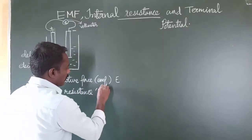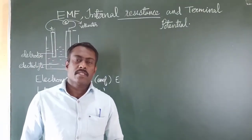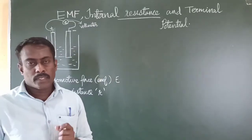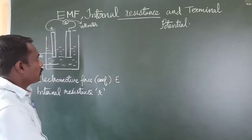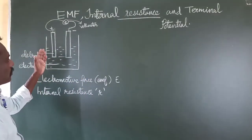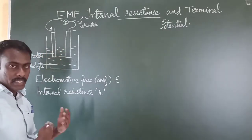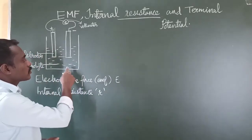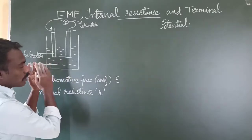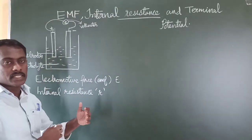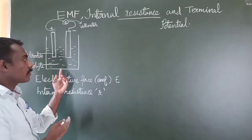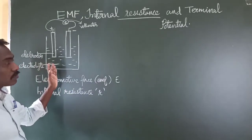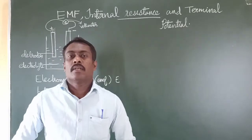The internal resistance of a cell depends upon some factors. The first factor is the nature of the electrodes. If the electrode material has maximum resistance against the flow of electricity, then the internal resistance of the cell will be large. Similarly, if the electrolyte liquid also has a naturally high resistance against the flow of electricity, then the internal resistance of the cell will be large. So the nature of the material of the components plays an important role in the internal resistance of the cell.